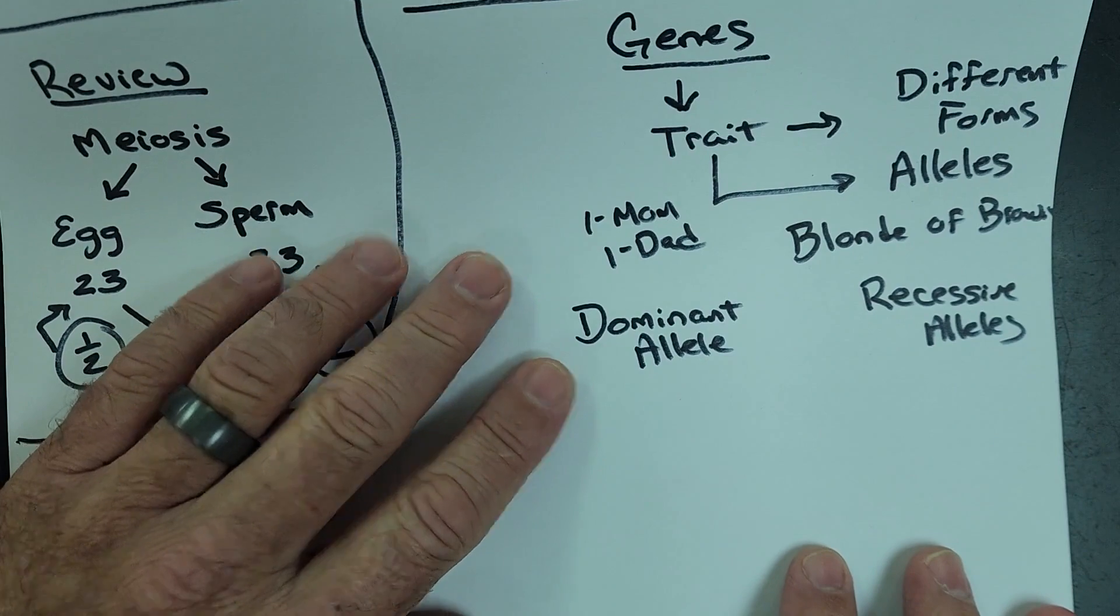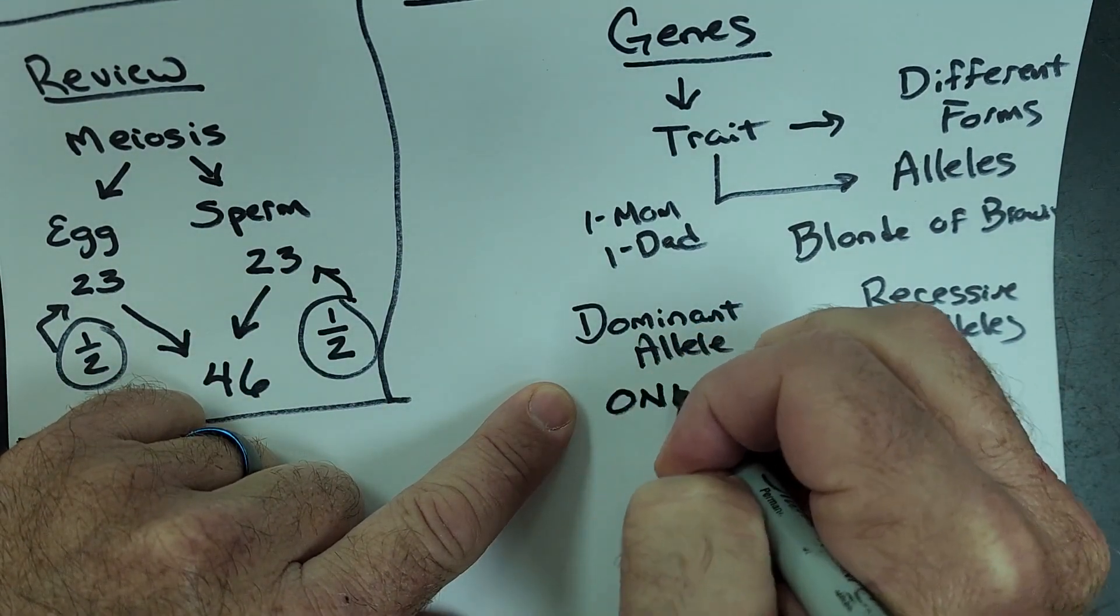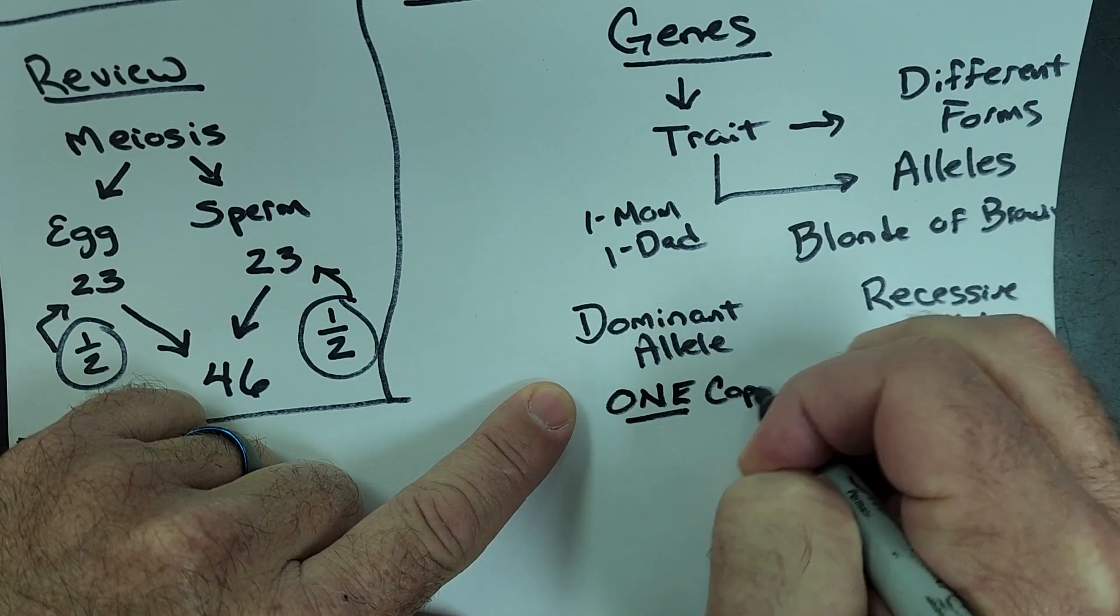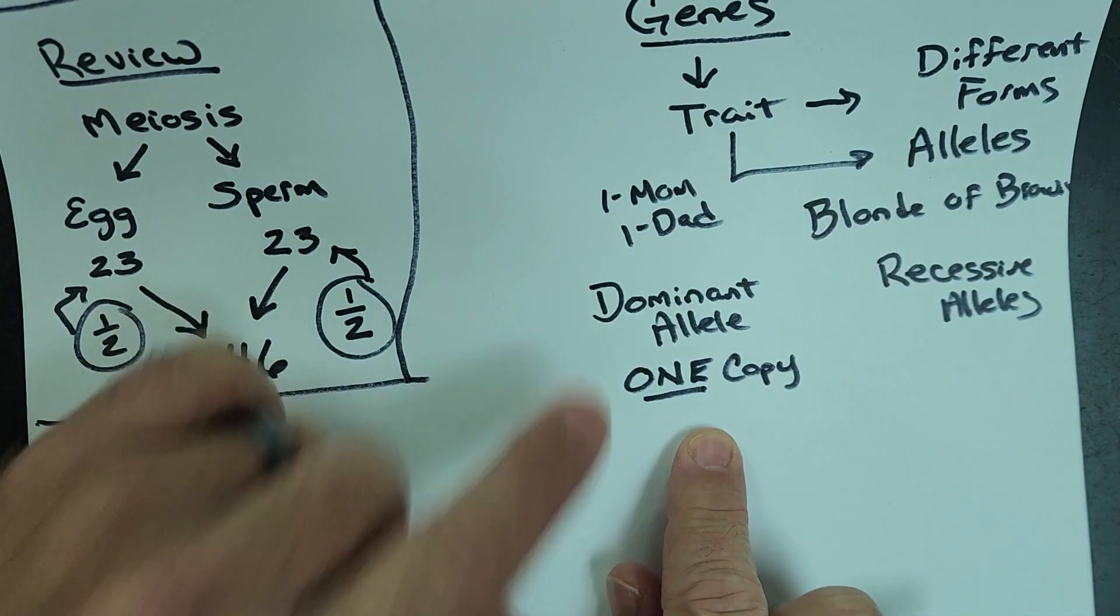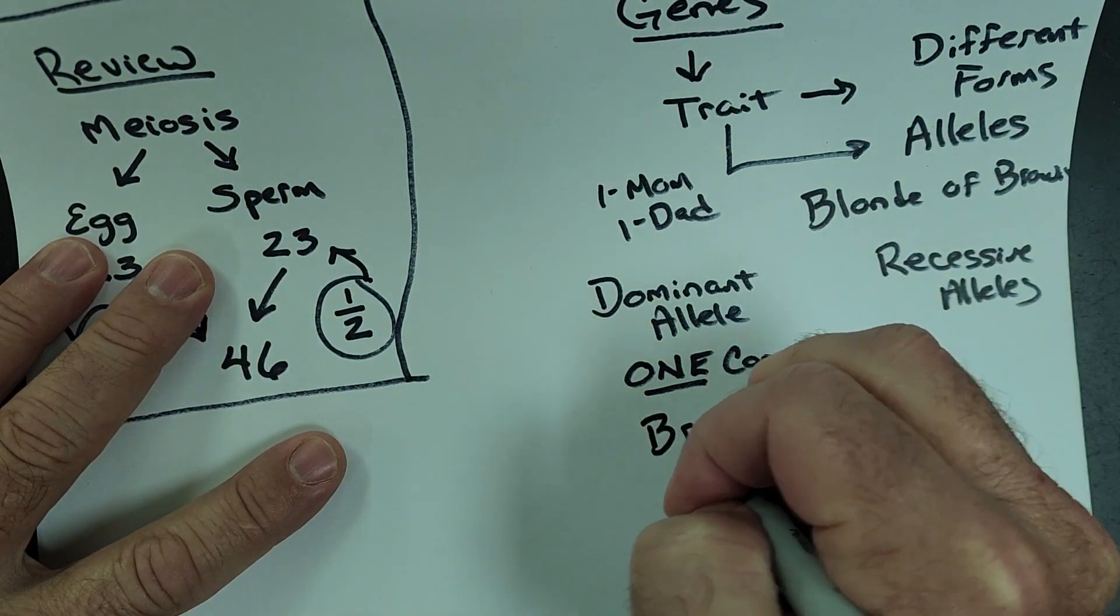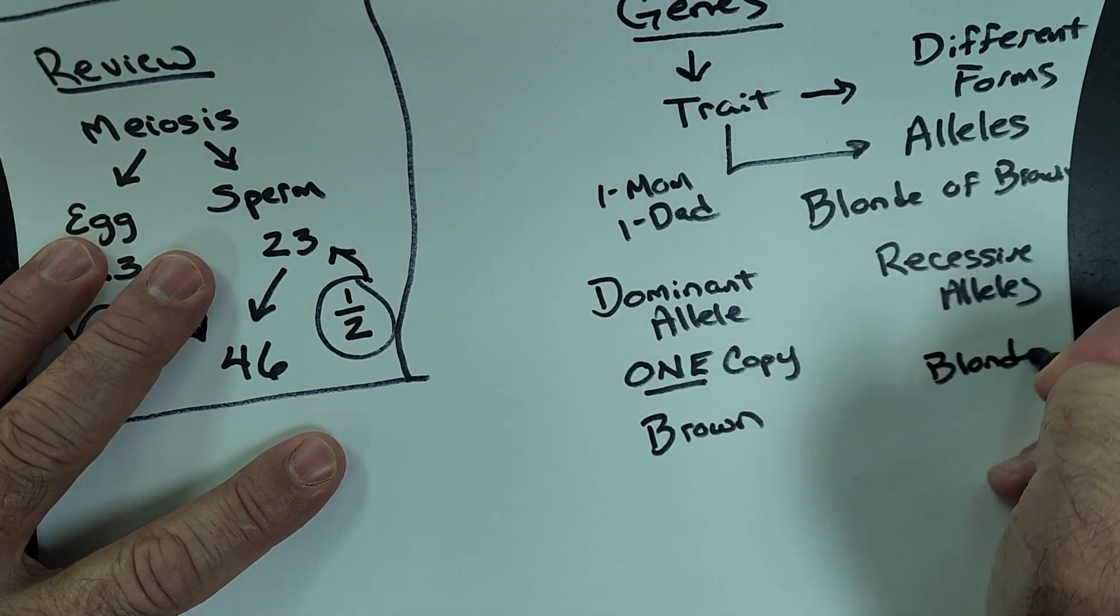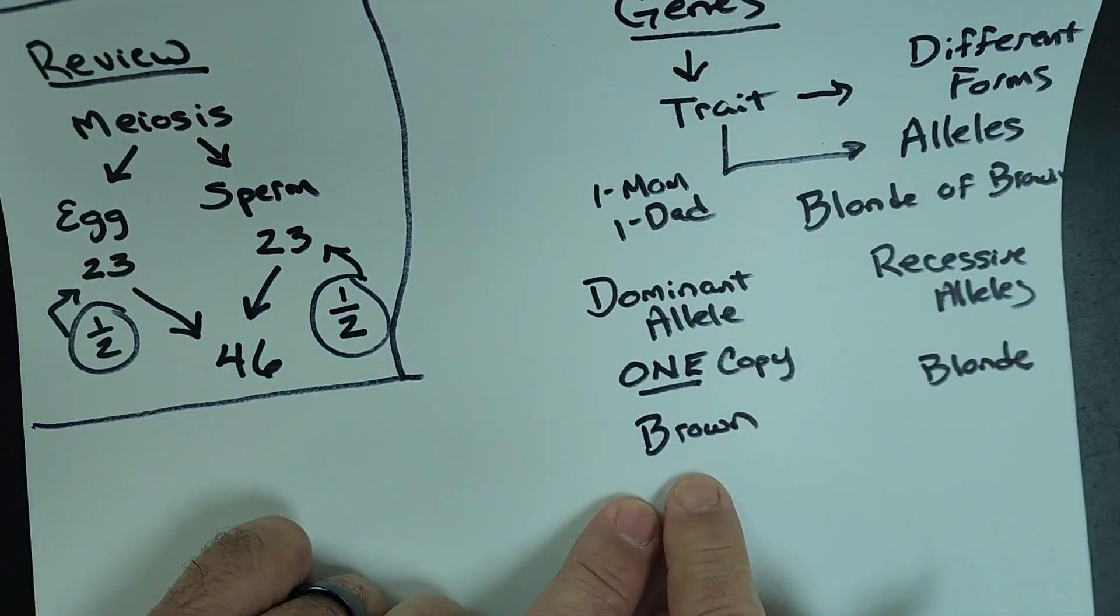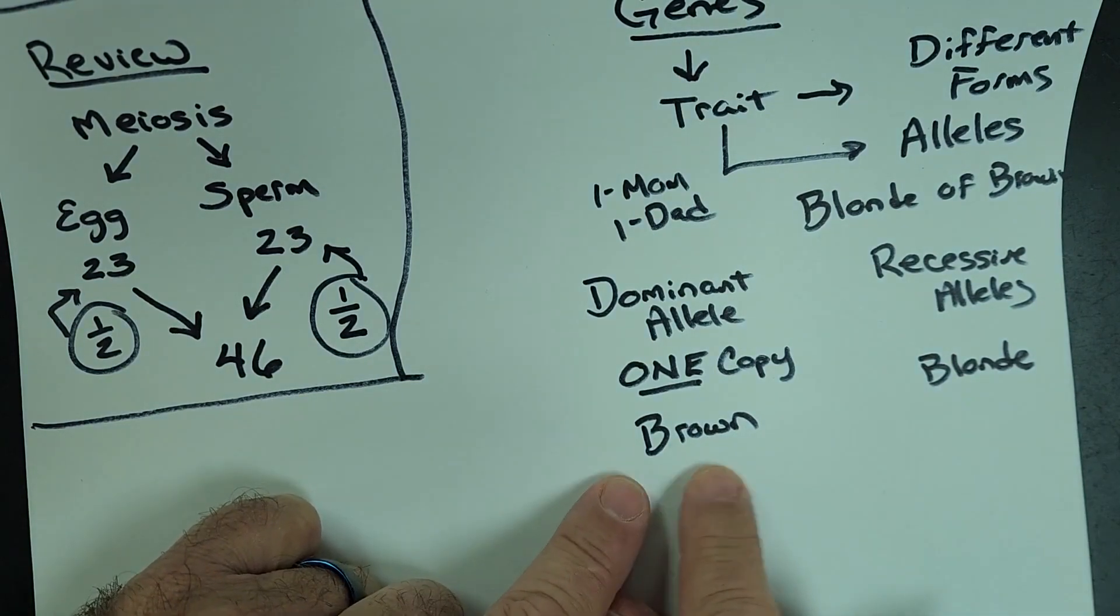If you have one copy, it only takes one copy of a dominant gene for you to express that dominant trait. So brown hair is dominant over blonde. You have to get, well, we'll cover blonde hair in a minute. To get brown hair, you only need one copy of the dominant allele.